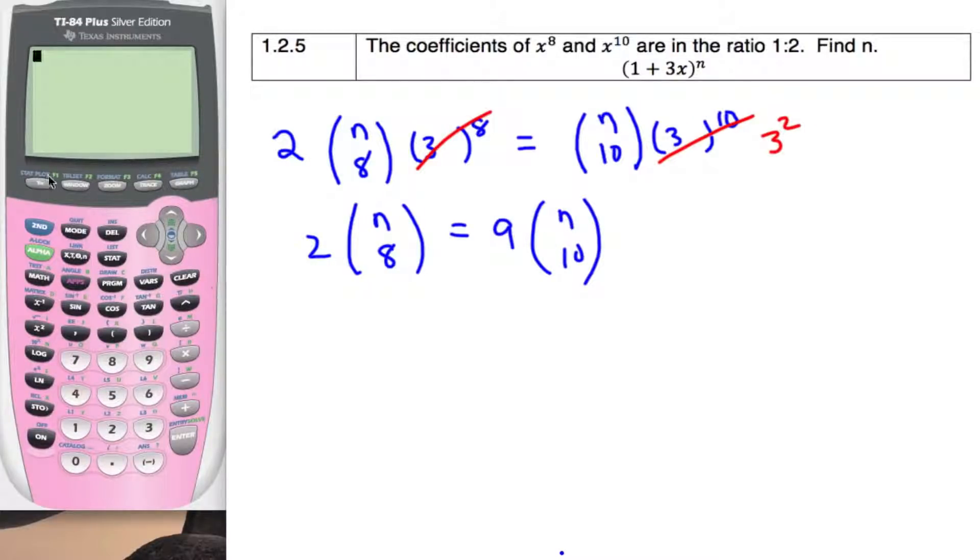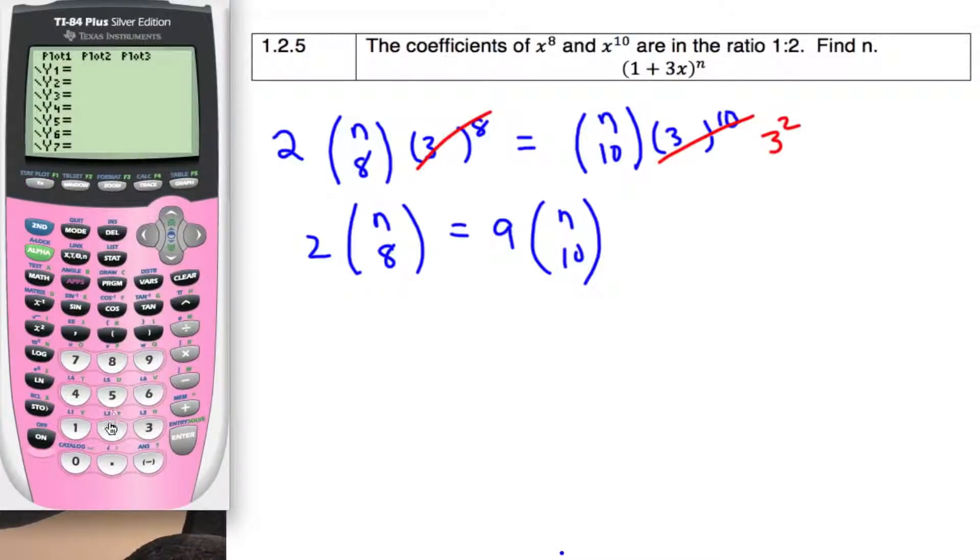So I'm going to go straight to my calculator and I'll type in 2 parentheses x prob down to number 3, 8. And 9 math prob number 3, 10.